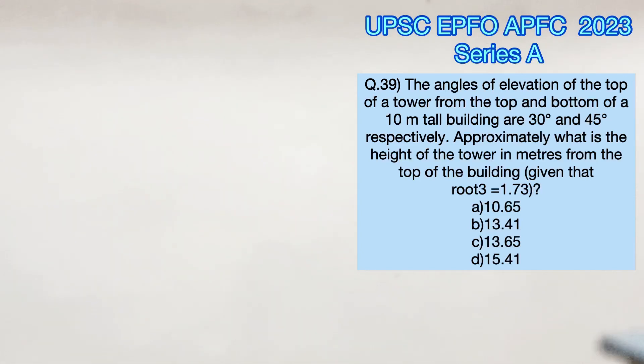Welcome to Aptitude Destination. Please pause the video and read the question completely. Given that the angles of elevation of the top of a tower from the top and bottom of a 10 meter tall building are 30 degrees and 45 degrees respectively, this will be the visual representation of the given statement.